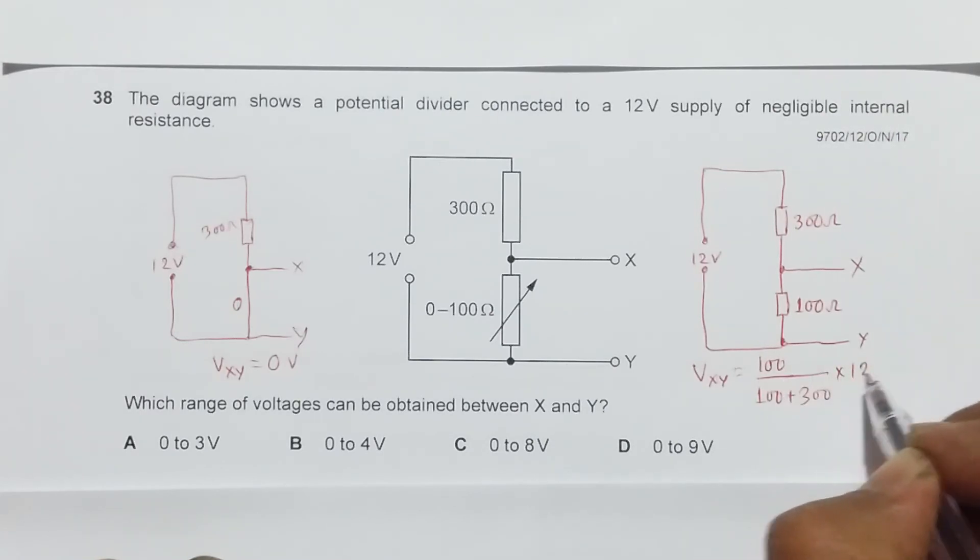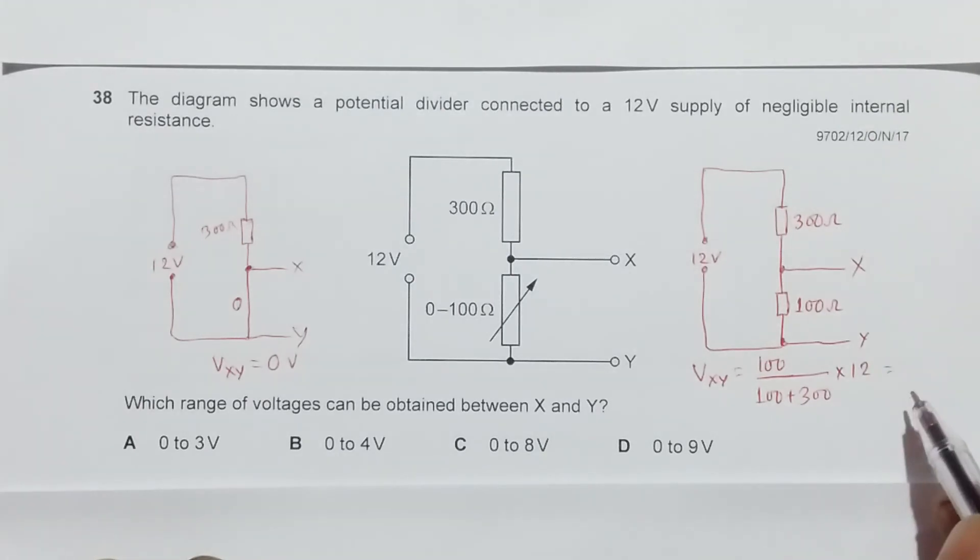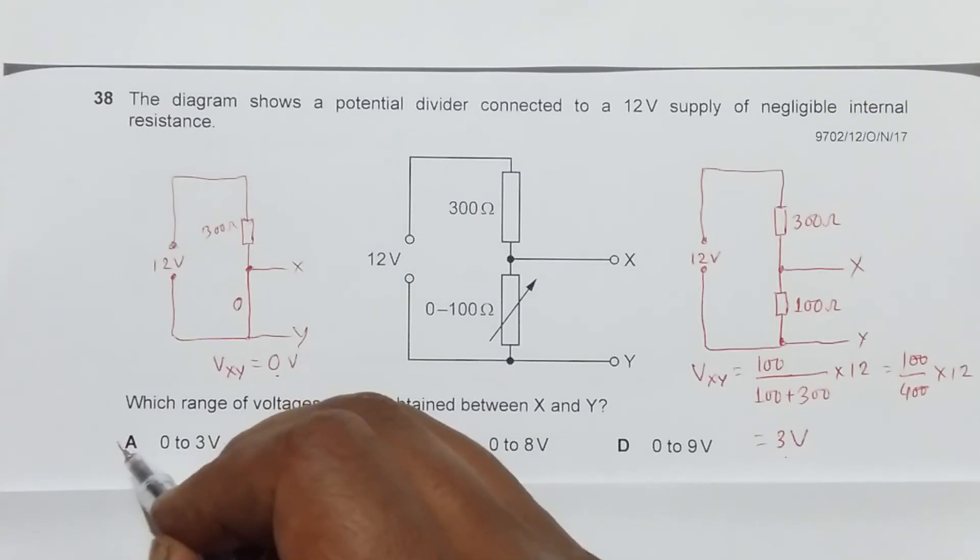It should be 100 by 400 into 12 and should be equal to - this will simplify to - it should be 3 volt. So our answer will be from 0 volt to 3 volt which is choice A.